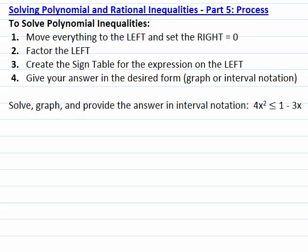Welcome to the fifth lesson on how to solve polynomial inequalities that are not in factored form. Remember the steps: first, move everything to the left so that the right is equal to zero. Second, factor the left. Third, create the sign table for the expression on the left. And fourth, give your answer from the sign table in the desired form.